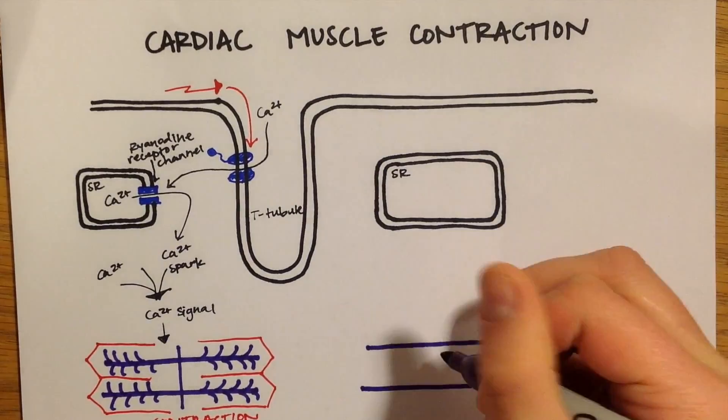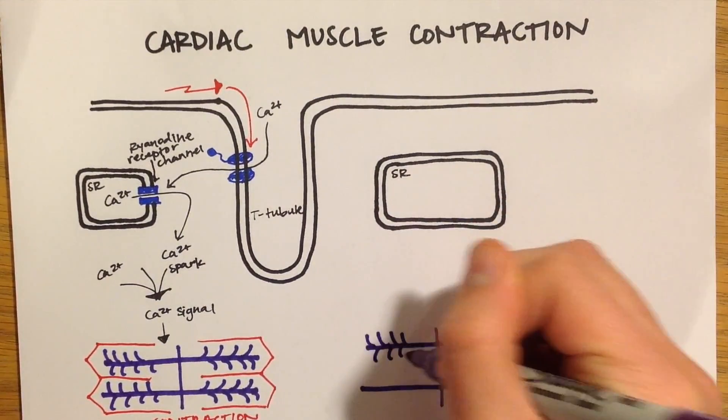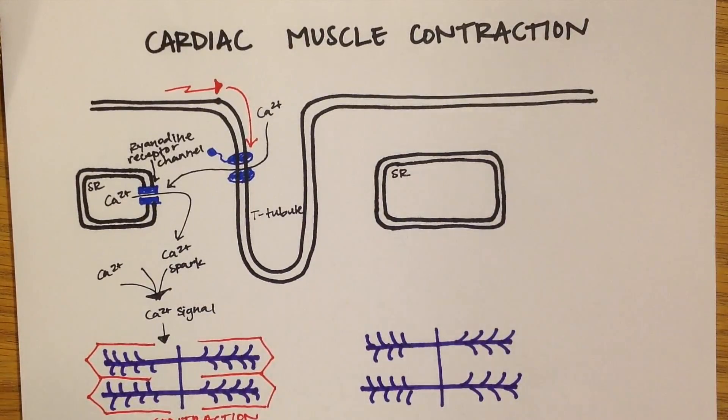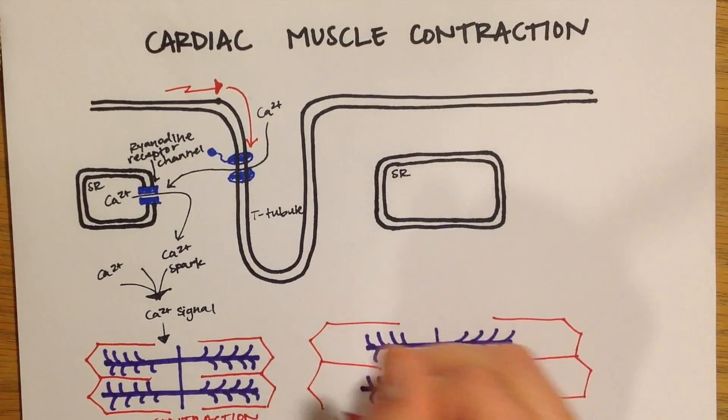Relaxation of the actin and myosin happens when calcium unbinds from the troponin. So here again we have the myosin and then the actin but this time in the relaxed form.